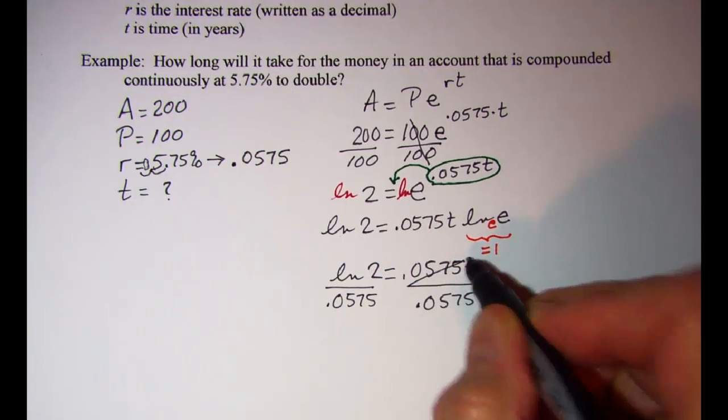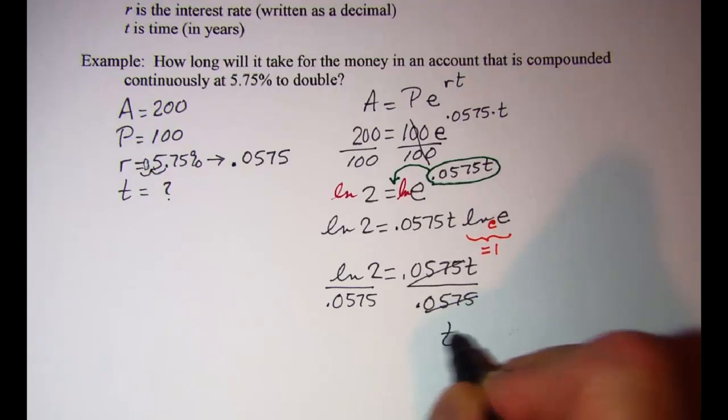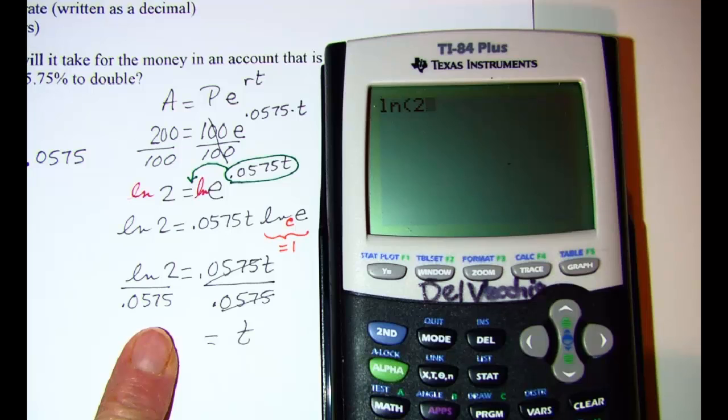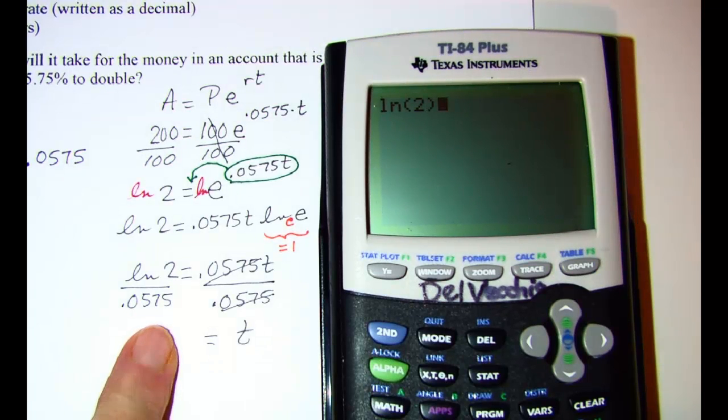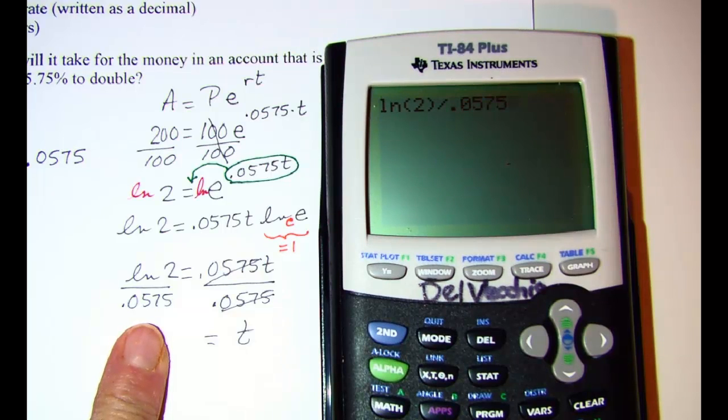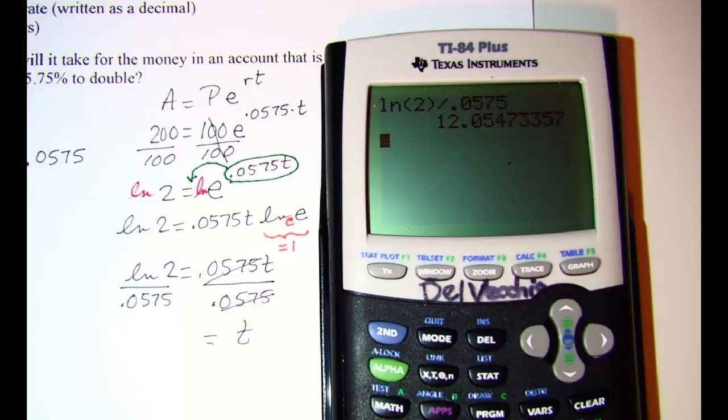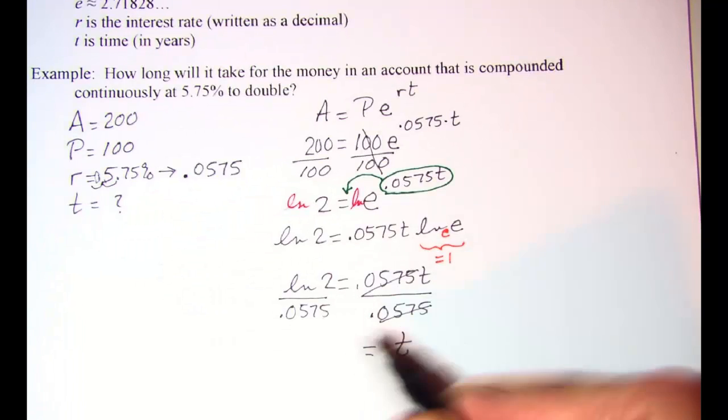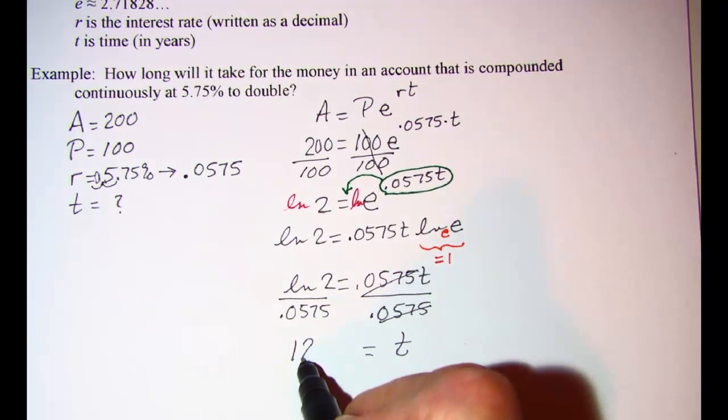These will cancel. And I have T on the right side and ln2 divided by 0.0575. Be sure to close up the parentheses before you hit the divided by key. Looks like 12. So my time is about 12 years.